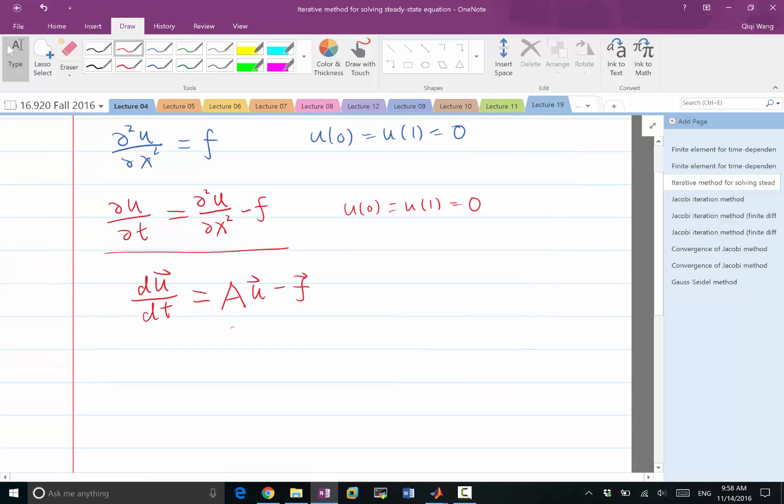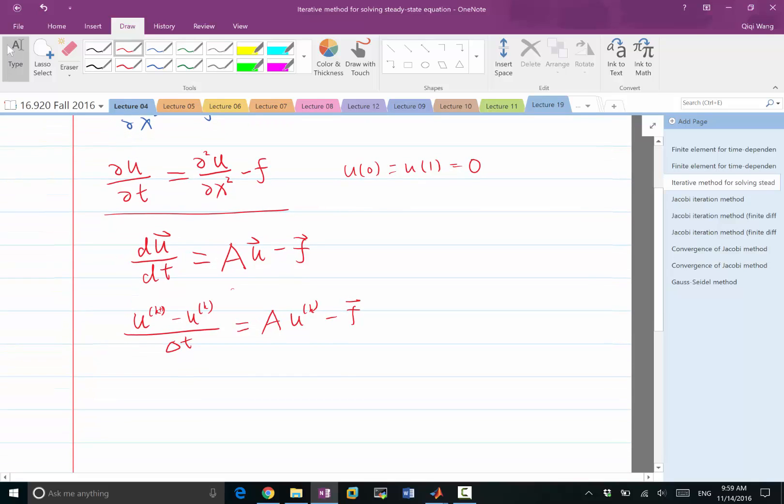For example, if I want forward Euler, I'm going to be saying u^(K+1) minus u^K divided by ΔT is equal to A times u^K minus f. So K here is the time step. And it makes sense for me to choose ΔT to be as large as this method is stable so that I converge to a steady state as fast as possible.